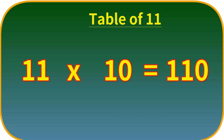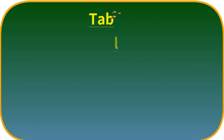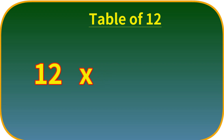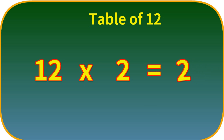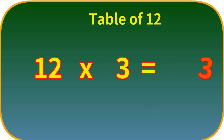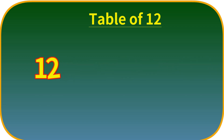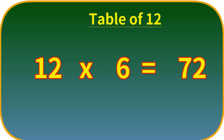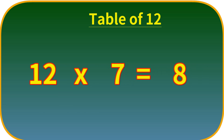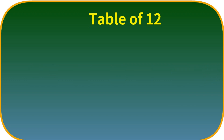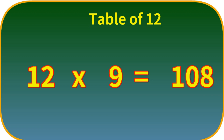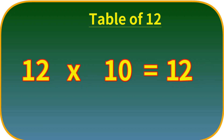Eleven tens are hundred-ten. Table of Twelve. Twelve ones are twelve. Twelve twos are twenty-four. Twelve threes are thirty-six. Twelve fours are forty-eight. Twelve fives are sixty. Twelve sixes are seventy-two. Twelve sevens are eighty-four. Twelve eights are ninety-six. Twelve nines are hundred-eight. Twelve tens are hundred-twenty.